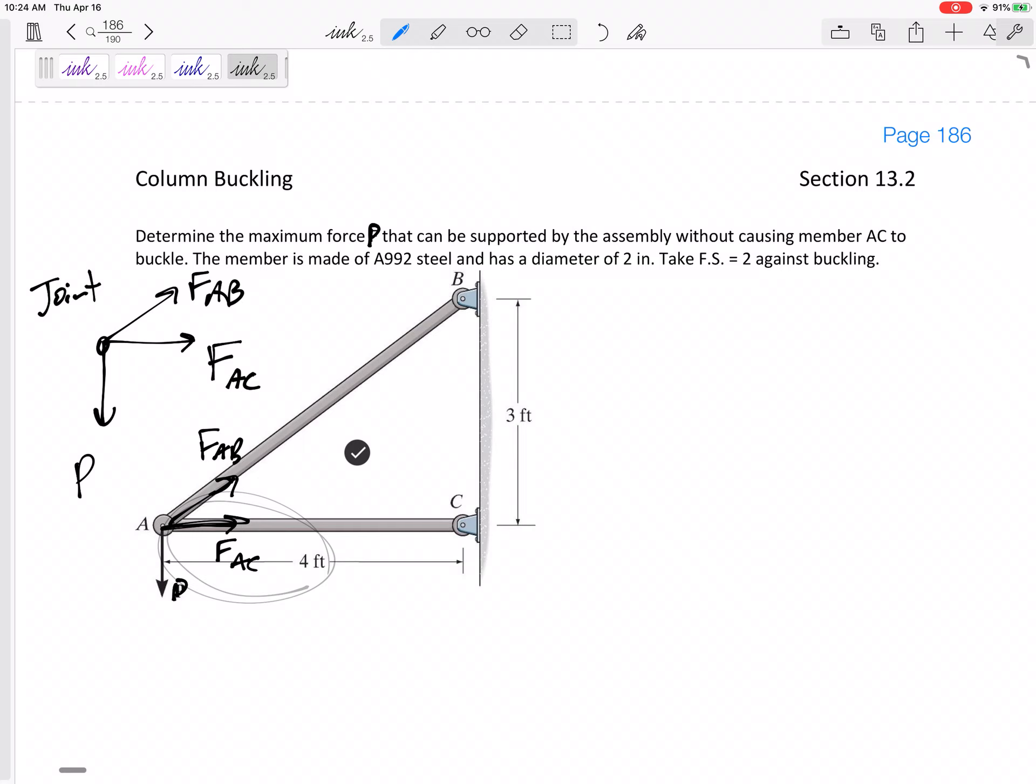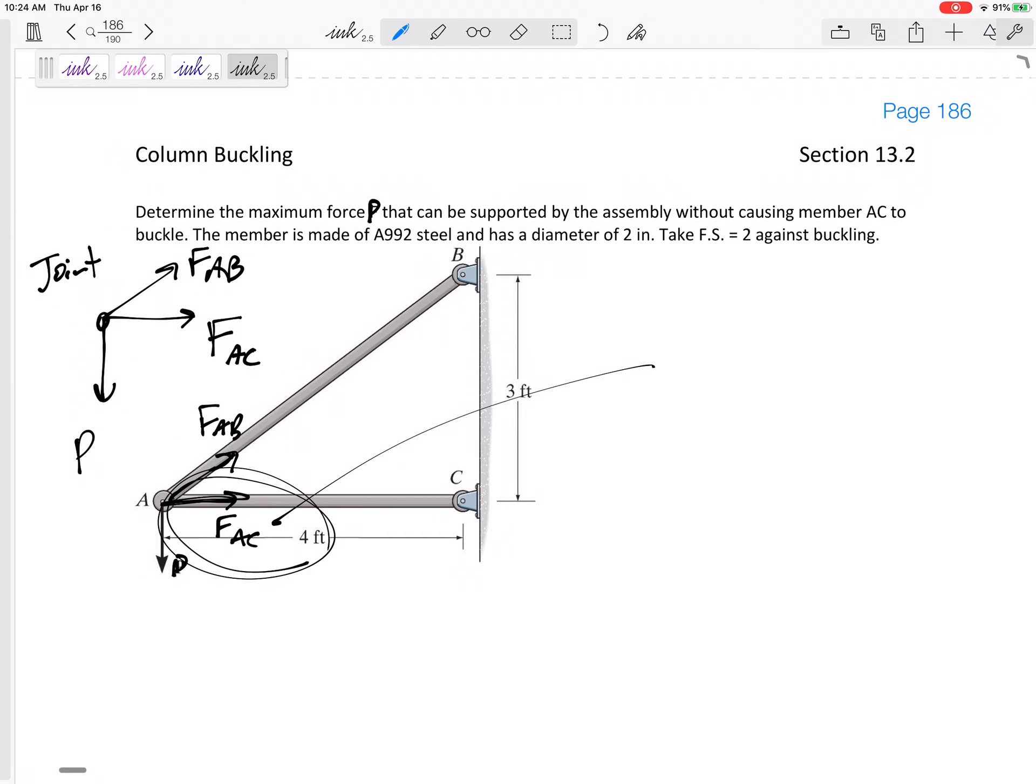Now, do you see that the force in AC, that's going to be the force we use for P critical equals pi squared EI over KL squared. This force down here is not the P. The P that we use in the column buckling is the actual force in the column that we are worried about buckling. So don't just solve for P and plug it in right there. Our FAC is what we're going to plug in right here.